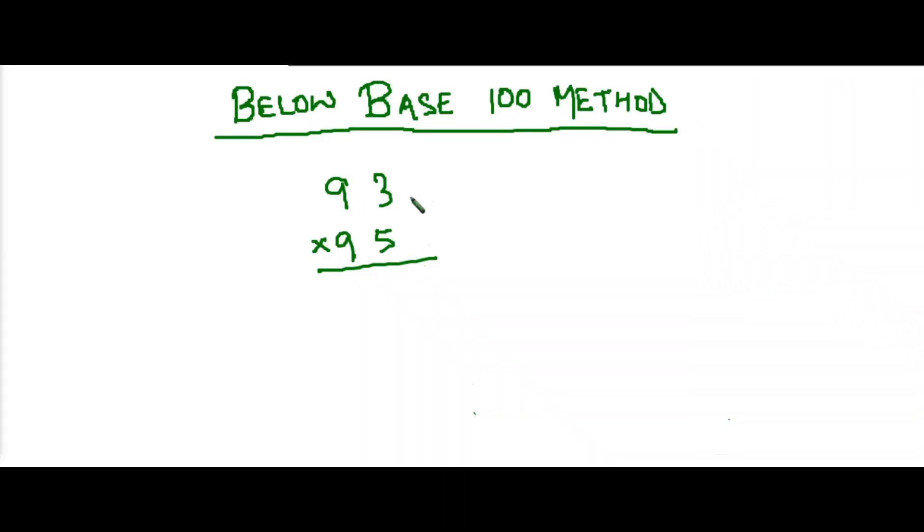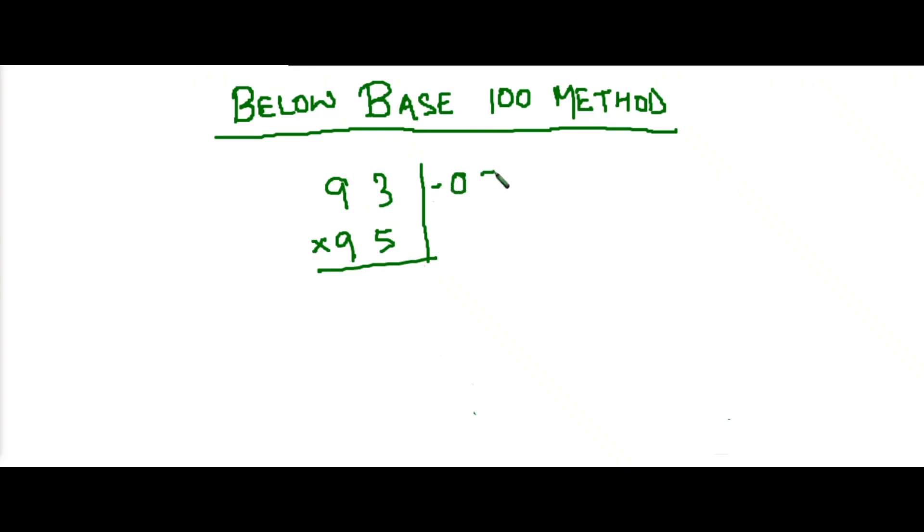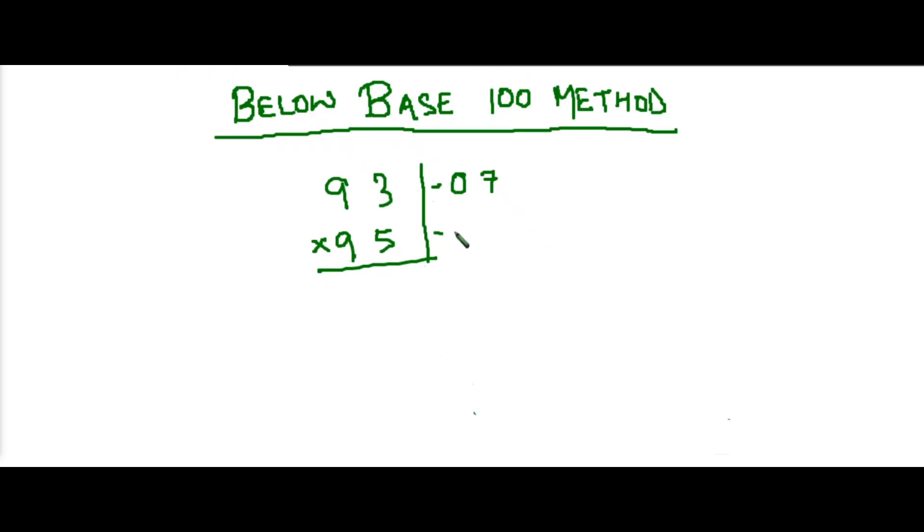Now let's take some more sums in order to practice so that you can build your confidence. We have 93 into 95. Now let's begin. 93 is 7 less than 100, so we will write minus 07. And 95 is 5 less than 100, so we will write minus 05.